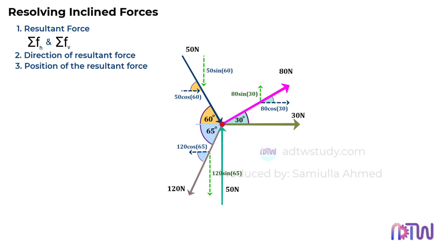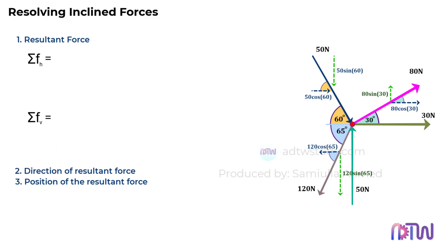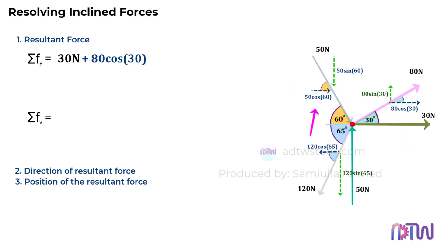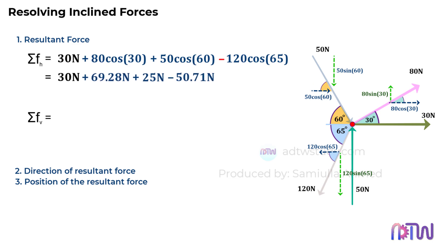Now we need to do the summation of all the horizontal and vertical forces. For the summation of horizontal forces, forces acting to the right are positive and those to the left are negative. The 30 newton force acts to the right, 80 cosine 30 degrees acts to the right, 50 cosine 60 degrees acts to the right, and 120 cosine 65 degrees acts to the left, so it has a negative sign. The summation of all these horizontal forces equals 73.57 newtons.